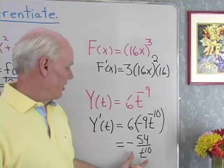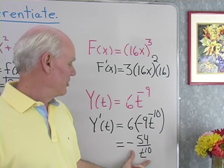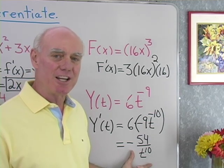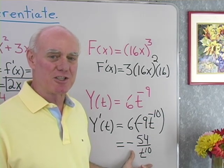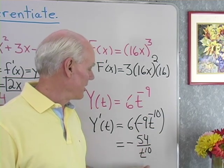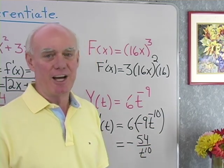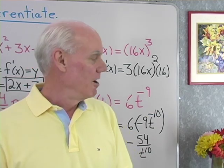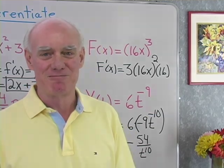Yeah, you know, if you left it as negative 54 t to the negative 10th power, you know, that's okay. It's still the correct derivative, but a lot of times instructors like you to write your exponents as positive numbers. So you have to see what your instructor wants you to do. But a quick look at finding some derivatives.